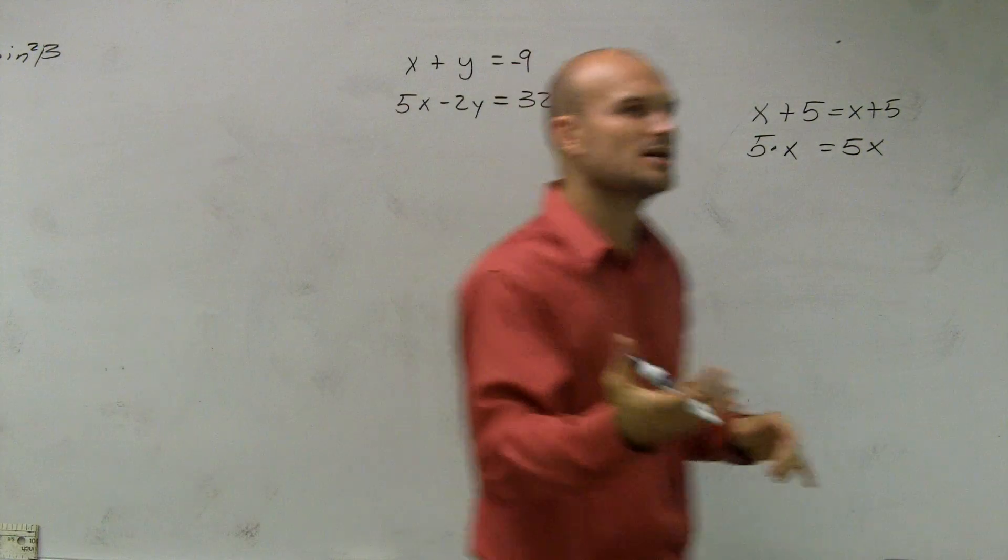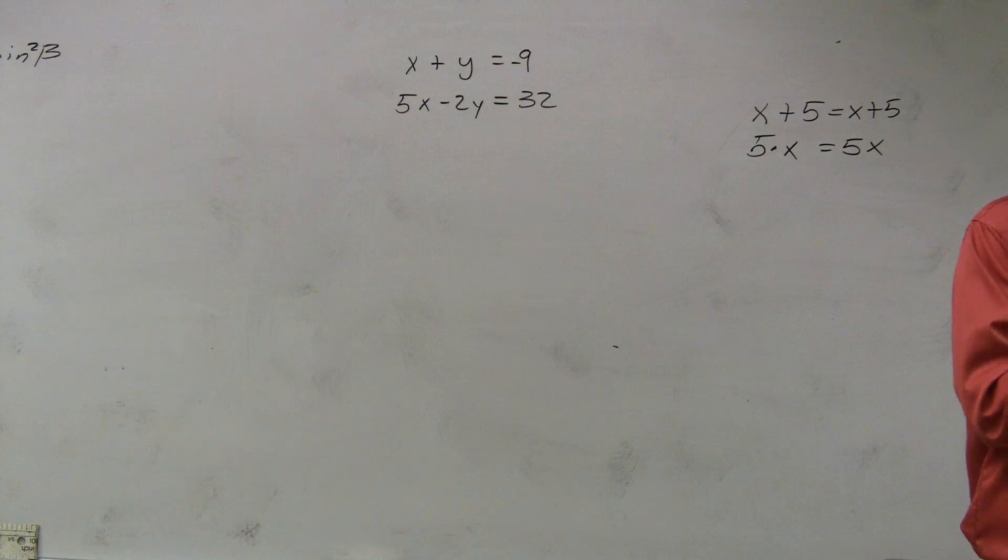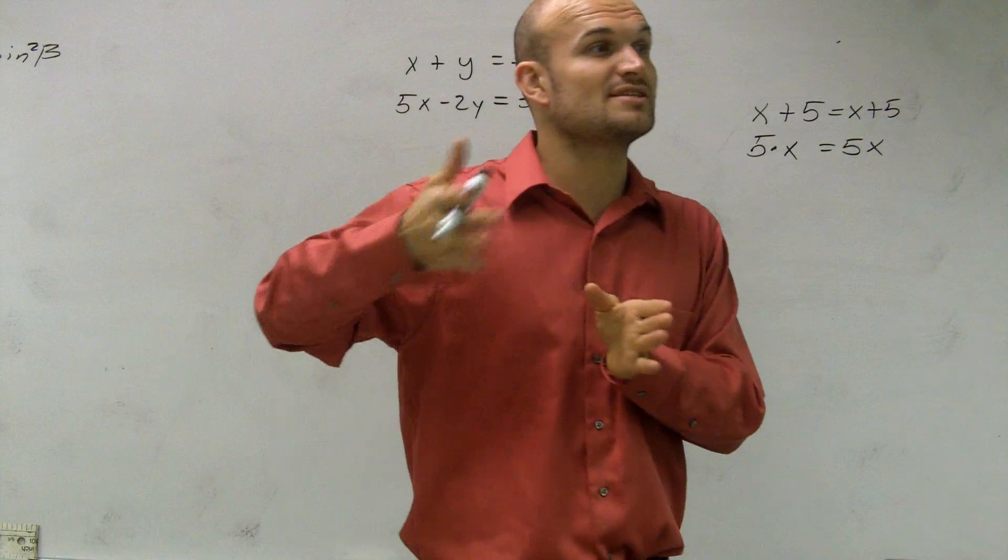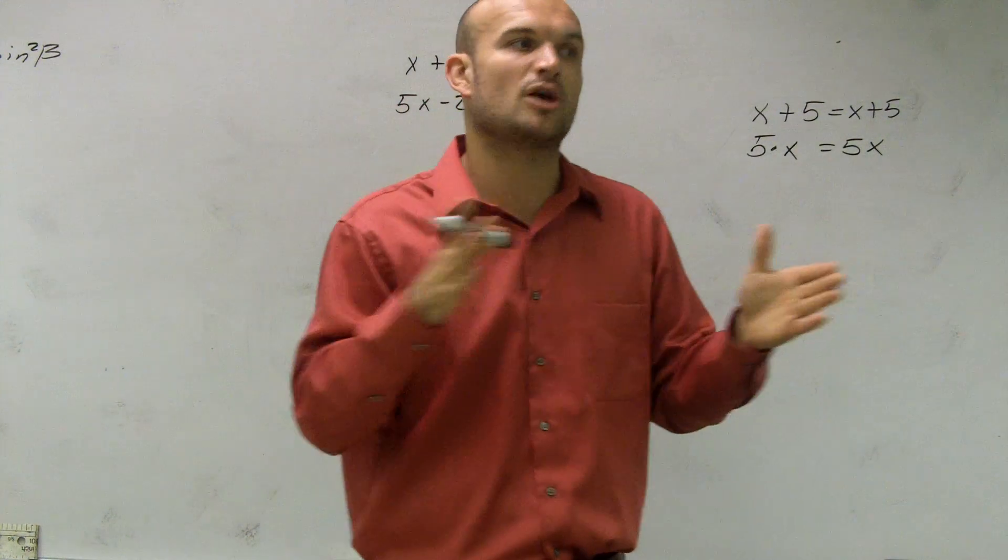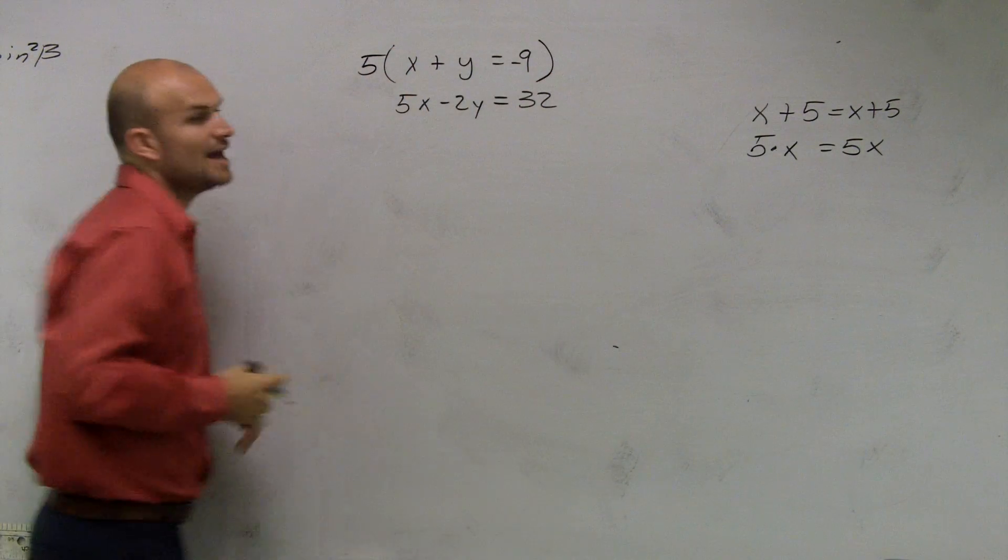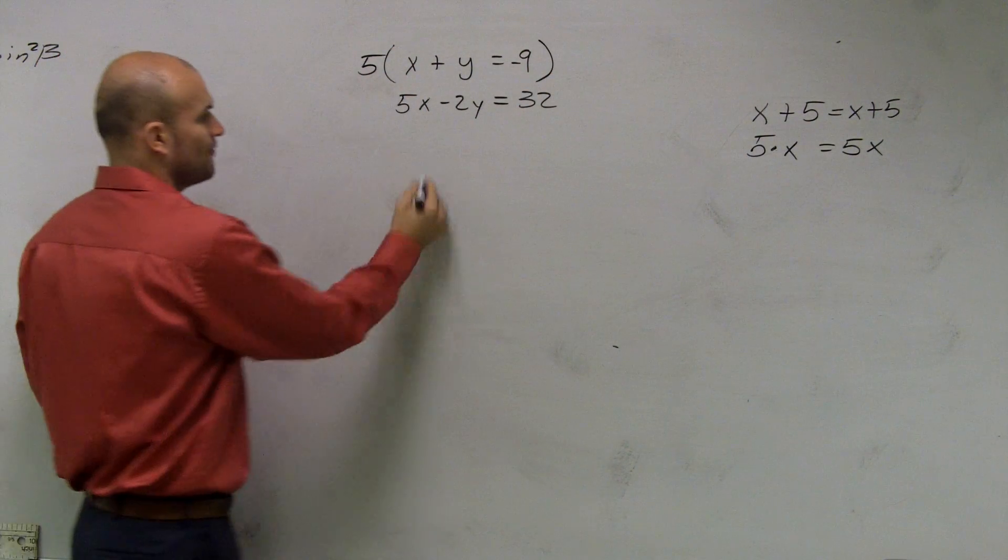And what do we do? Remember when we were solving equations? If I did something on one side of the equation, I had to do it to the other side. Or a lot of times, you just have to make sure, if you're multiplying by five, you have to make sure you multiply everything. So what I'm going to do is I'm going to multiply everything times five.